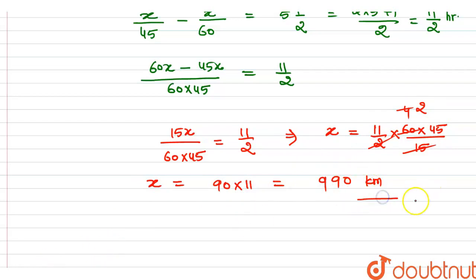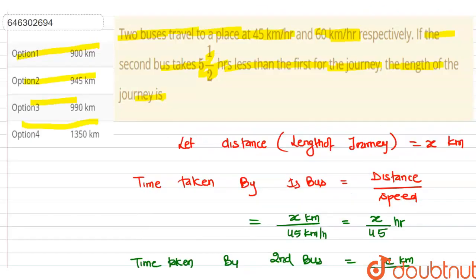So the length of the journey is 990 km. This is our final answer. We can highlight that 990 km corresponds to option 3, so the third option is the right answer. Thank you.